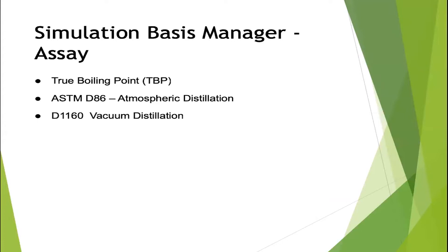The data used for determining the assay includes TBP data and different types of distillations: ASTM D86, which is atmospheric distillation, and D1160, which is vacuum distillation. Using this data in HYSYS, you can select the type of distillation and generate hypo-components that will replicate the crude you have.